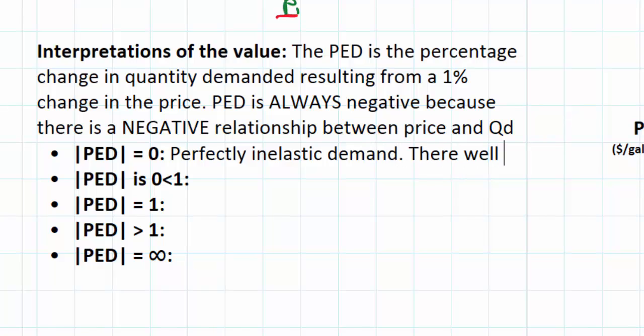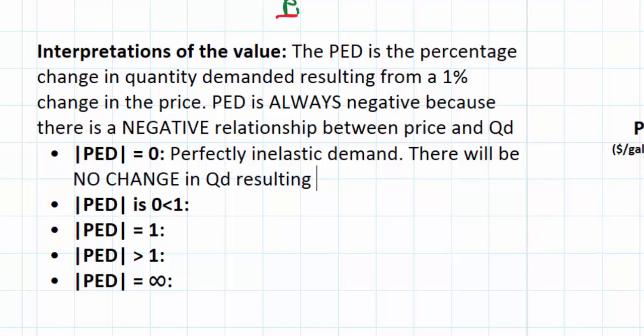This is what we call perfectly inelastic demand. So there will be no change in quantity demanded resulting from a change in price. Now while this is theoretically possible, it actually defies the law of demand. We know that the law of demand says that as price increases, quantity demanded decreases. So it's a very rare circumstance that the demand for a good will be perfectly inelastic.